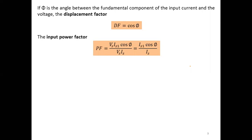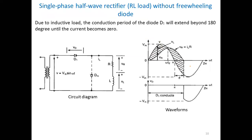The input power factor is given by: Power Factor = (Vs × Is1 × cos φ) / (Vs × Is).